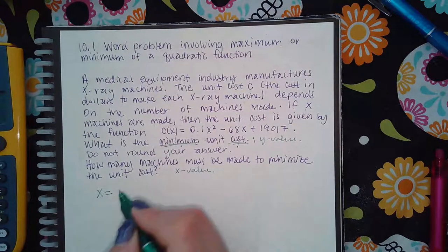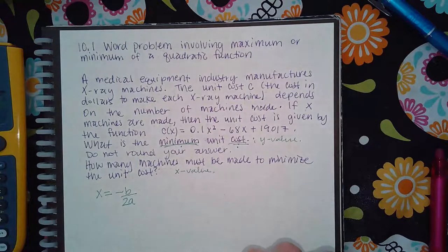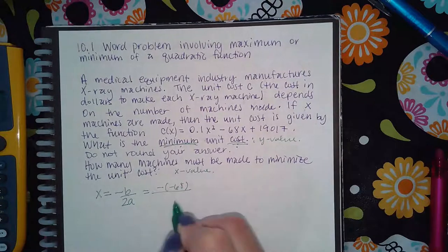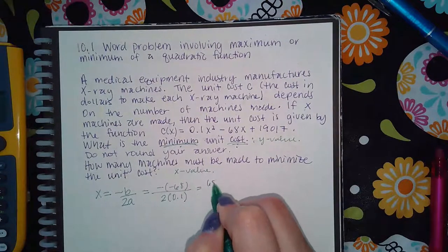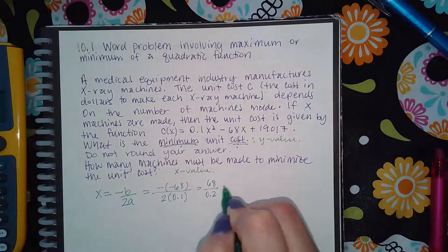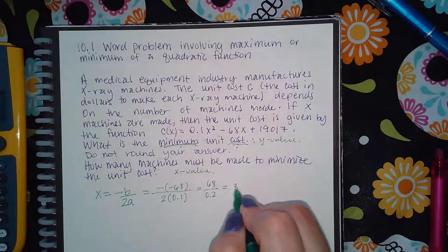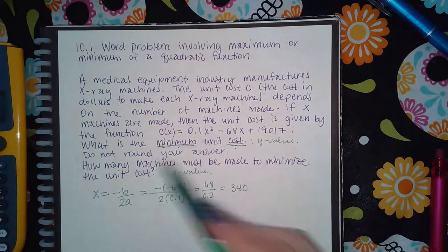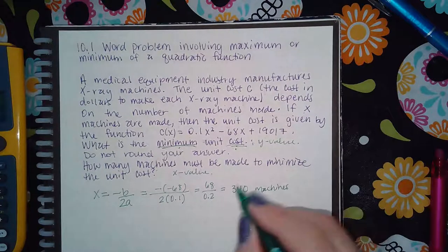But to find that minimum or maximum, I still need to start off with x = -b/2a. So negative of a negative 68 for b and a positive 0.1 for a, I get positive 68 over 0.2, which turns out to be 340. So I already know the answer to the second part: 340 machines must be made.